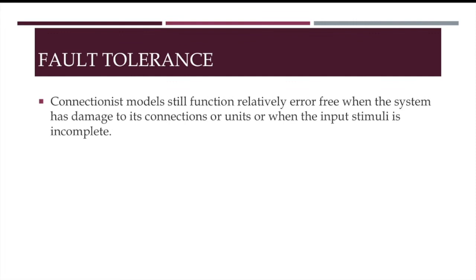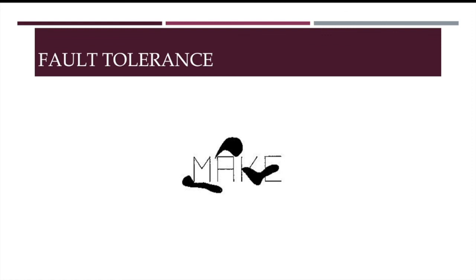Connectionist models are also said to exhibit fault tolerance. They still function relatively error-free when the system has damage to its connections or units, or when the input stimuli are incomplete. So, even when part of a stimulus has been obscured, the rest of the connection weights may be strong enough to elicit the correct response. So, for instance, in this case, you have no problem recognizing the word make, even though the K has been obscured. This is why neural networks are good at pattern completion, and do a good job at pattern recognition under noisy circumstances. And so are you, say connectionists.